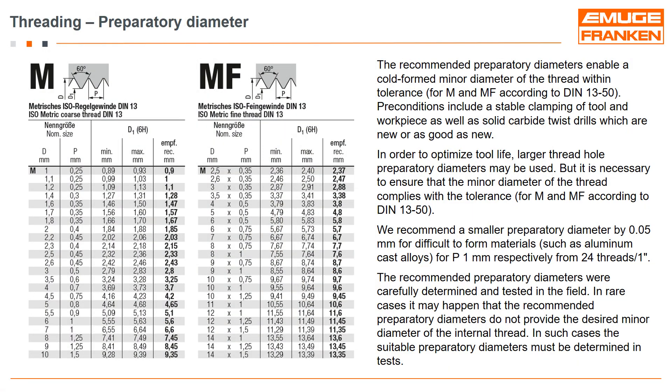There are two important points to note. Firstly, the core hole is larger than for thread cutting tapping. You can easily find these core hole diameters in our EMUGE thread tables and catalogues. Secondly, it should be noted that the produced minor diameter has a larger tolerance as compared to tapping, according to DIN 13 part 50.